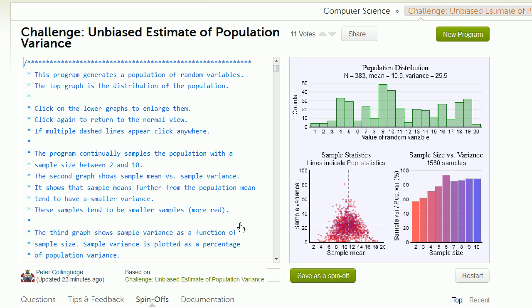So what this simulation does is, at first, it constructs a population distribution, a random one. And every time you go to it, it'll be a different population distribution. This one has a population of 383. And then it calculates the parameters for that population directly from it. The mean is 10.9. The variance is 25.5.